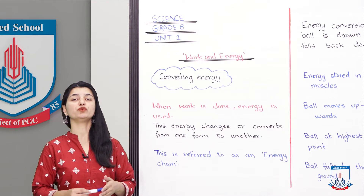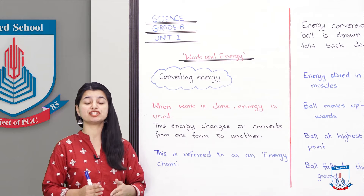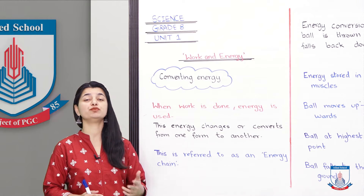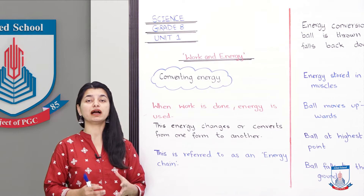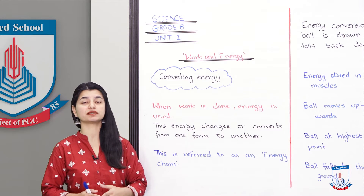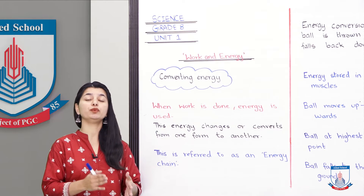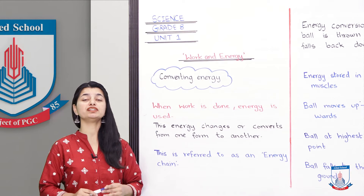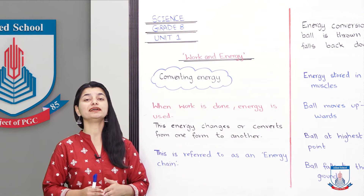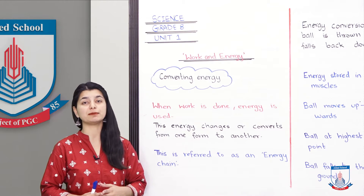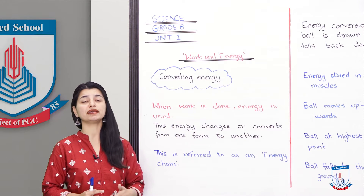When we started talking about work, we said that whenever we move something — apply force, move it a distance — work is done. And work is not possible until we have energy, so for work we require energy. When we started the discussion of energy, we categorized two different types: potential energy and kinetic energy.